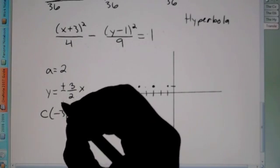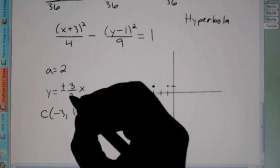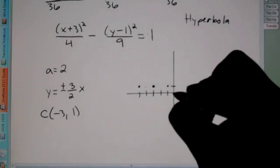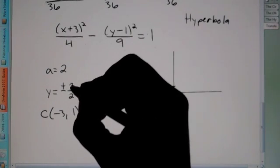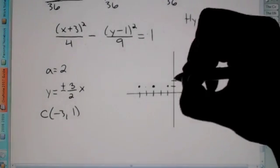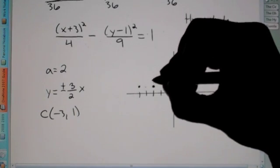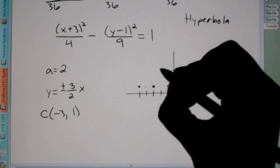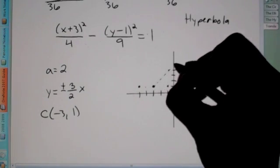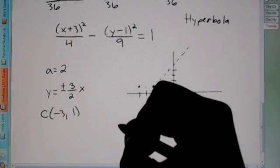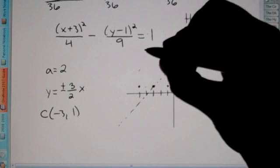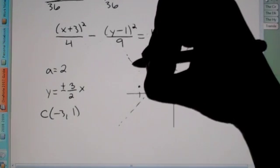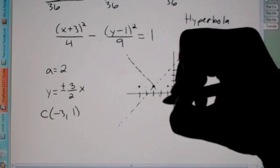But I also need to do my asymptotes. And remember, this is rise over run, and we do that not from the origin, but from the center of the hyperbola. So rise 3, run 2. So we're going to rise 3. So up 3, over 2. I'm going to put a dot there. And that's where we do our dotted line to represent the asymptote. And then rise 3, back 2. So there goes our dotted line that goes through the center.